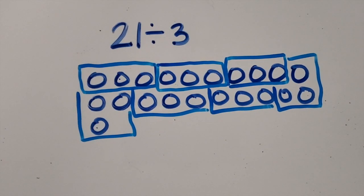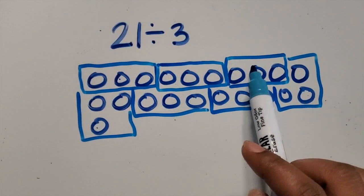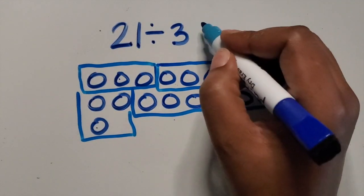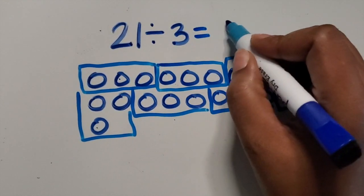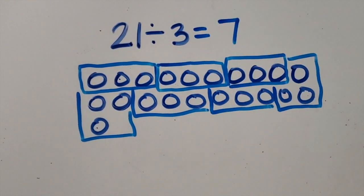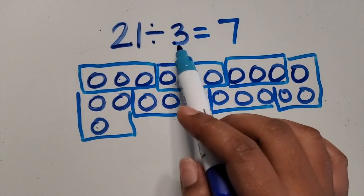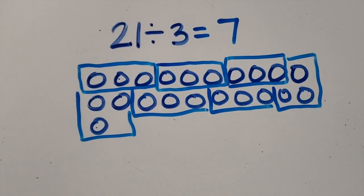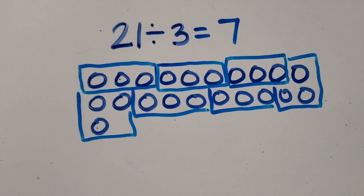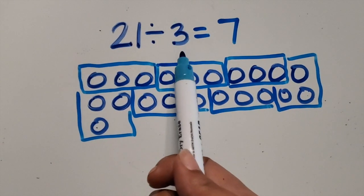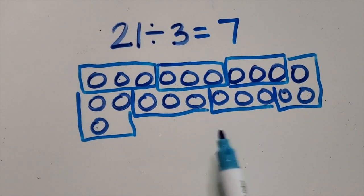The question is how many total groups do we have now? 1, 2, 3, 4, 5, 6, 7. 21 divided by 3 equals 7. So 21 divided by 3 in each group gives us 7 equal groups. We took a two-digit number, divided it by a one-digit number using a quick pick of equal groups.